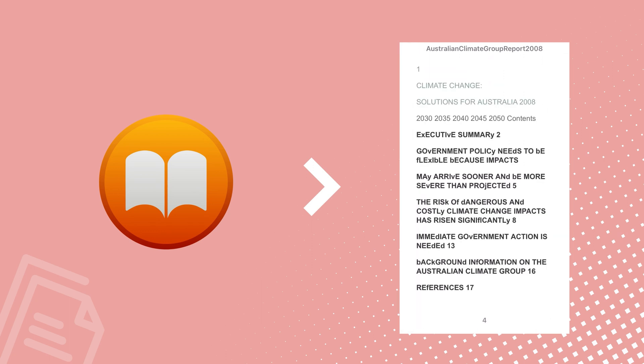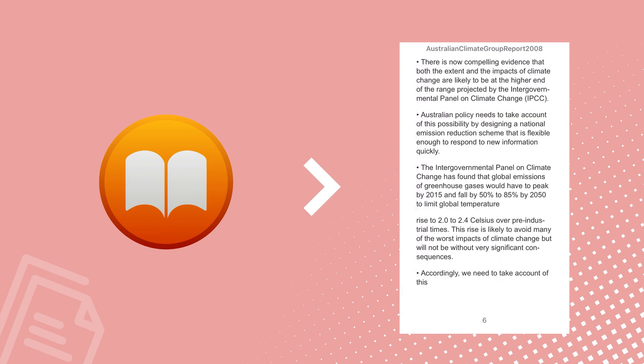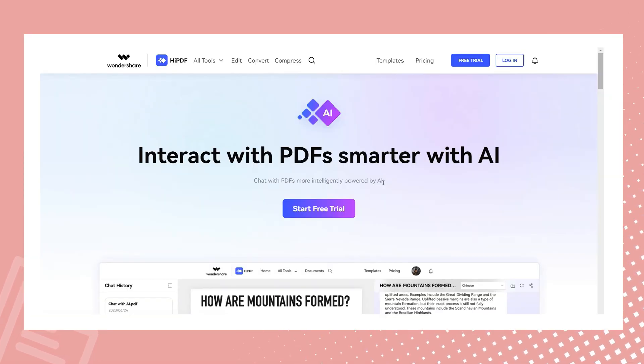And there you have it — you've successfully converted your PDF to EPUB format using HiPDF. Now you can enjoy a more flexible and interactive reading experience on your preferred e-reader. If you have PDFs to convert, check out the link in the description. Thanks for watching.